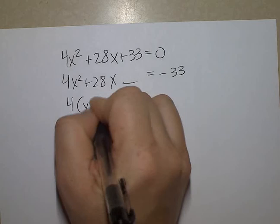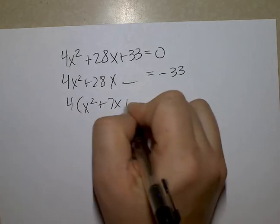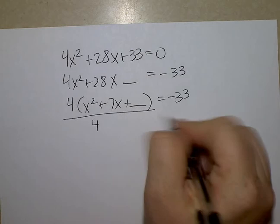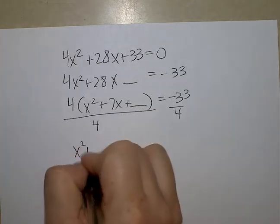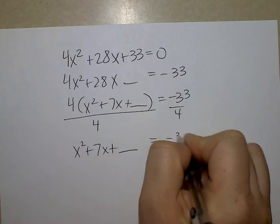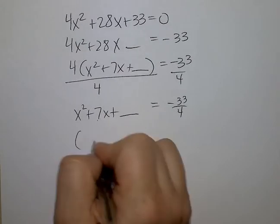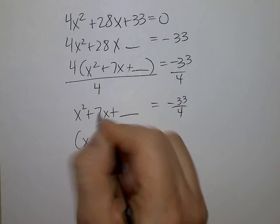This time I'm going to remember to make it negative 33. Factor out a 4. Divide by the leading coefficient of 4. That's my fault. 7 divided by 2 is just 7 halves.